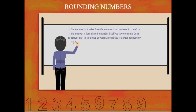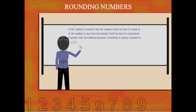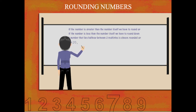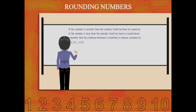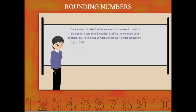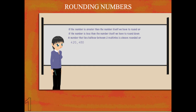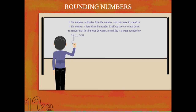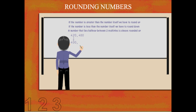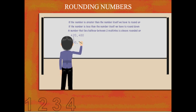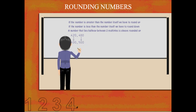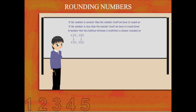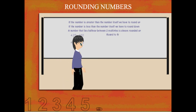A number that lies halfway between two multiples is always rounded up. Nancy ma'am shows the example: 420 becomes 400 and 480 becomes 500.